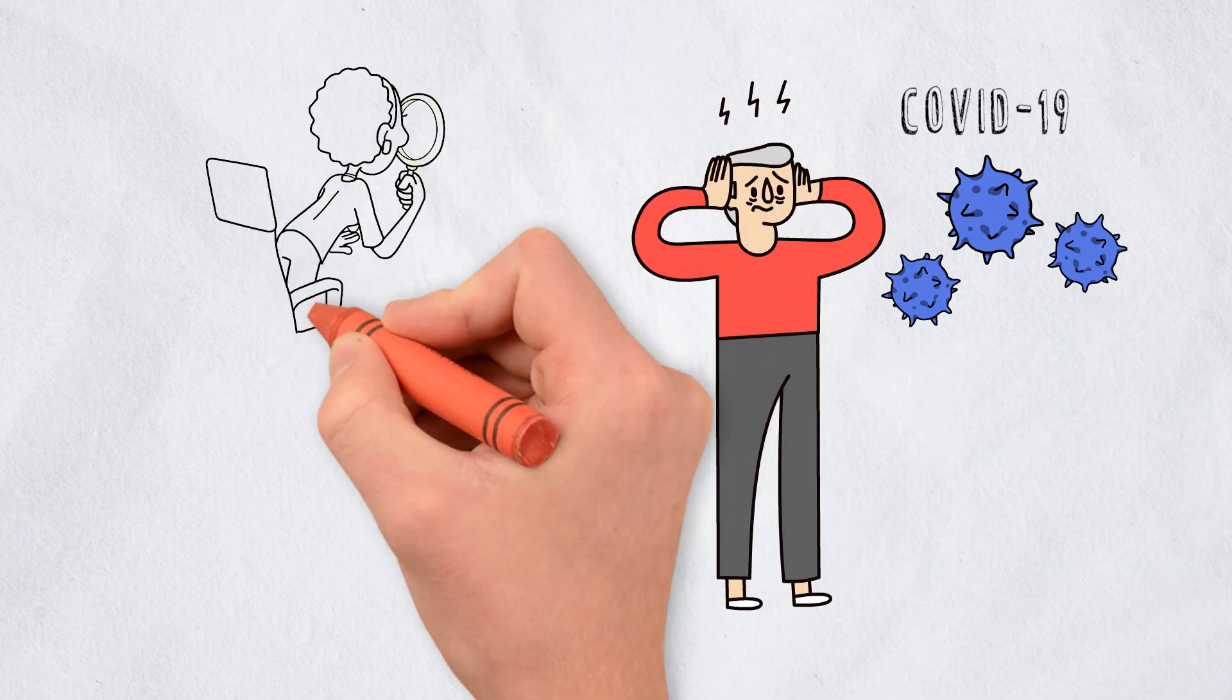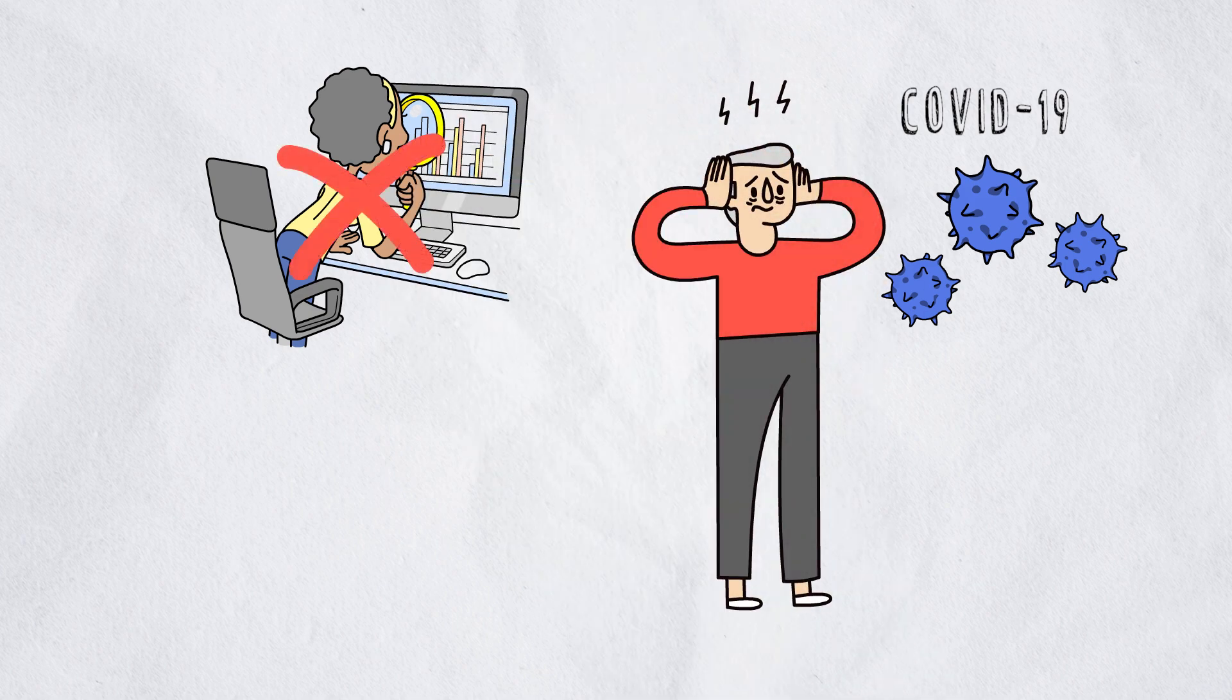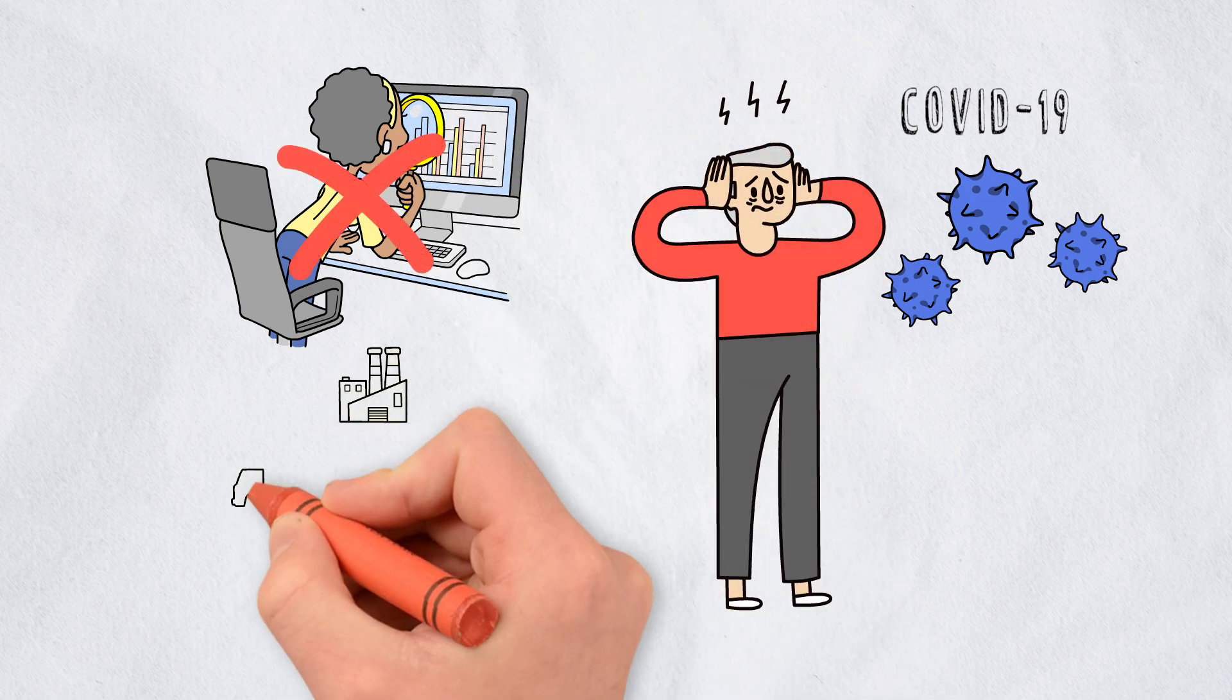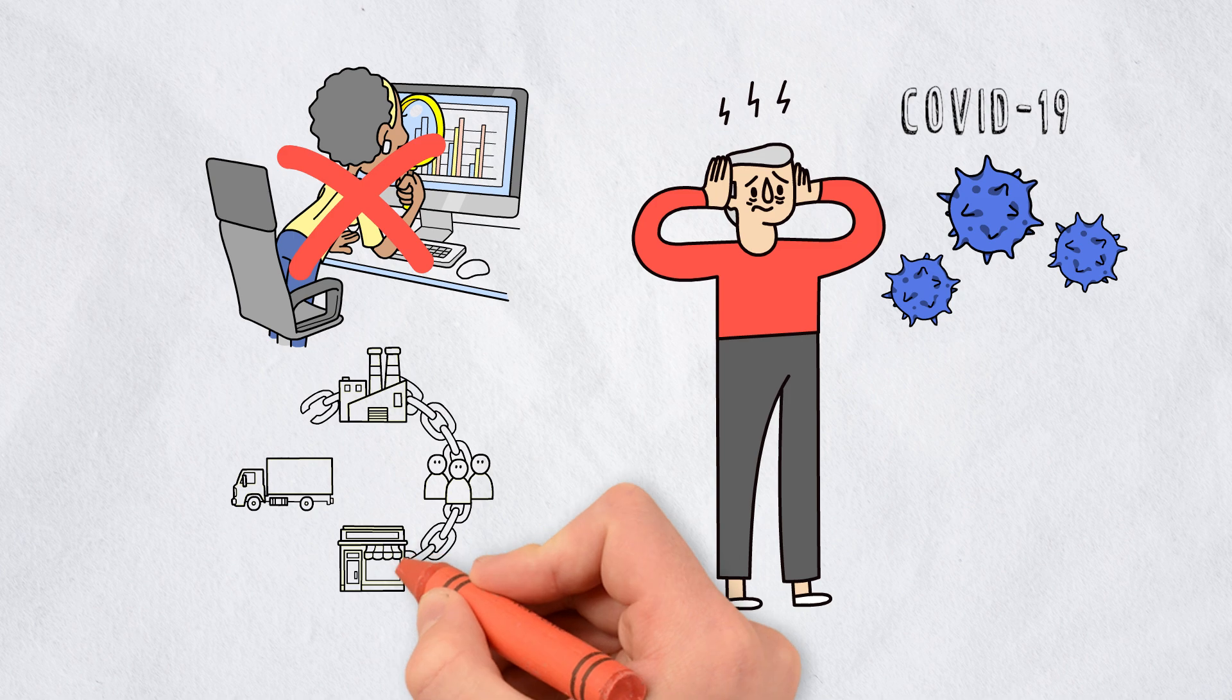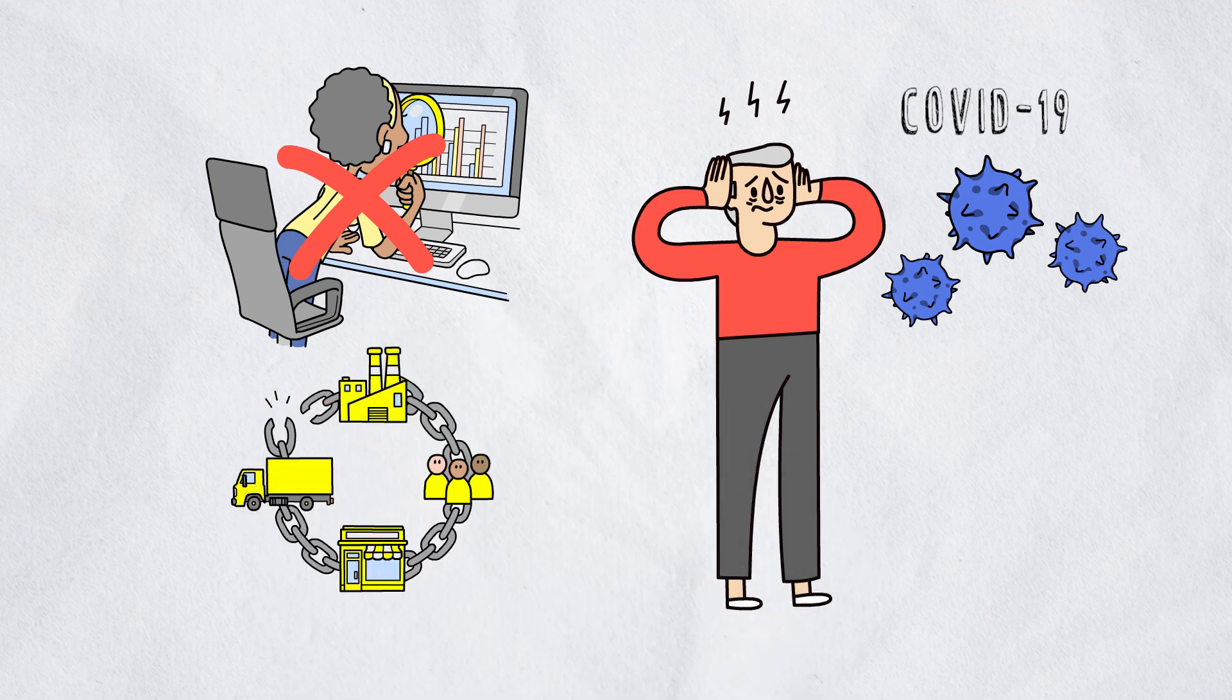Factories dependent on migrant workers faced labor shortages as workers returned to their home countries. Additionally, the industry's minimal inventory approach meant any disruption could halt the entire supply chain.